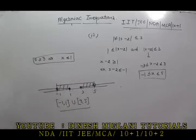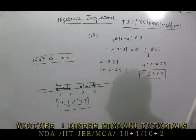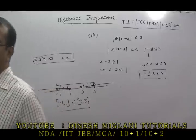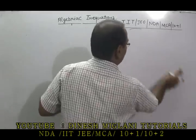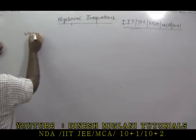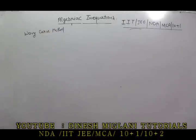I hope the idea is clear. That is our second part of this topic — algebraic inequations — in which we have understood how to solve questions based on modulus. Now in the third part of inequality, we will discuss questions where we apply the wavy curve method, also called the number line method.